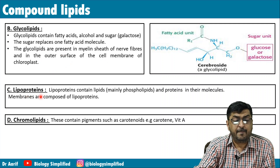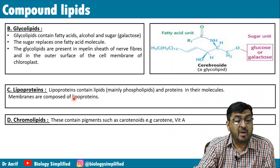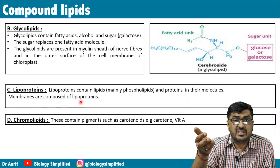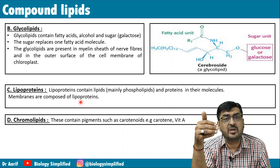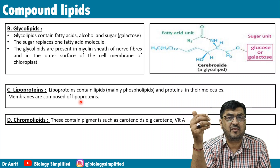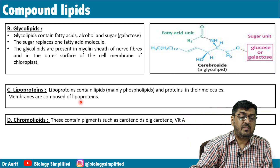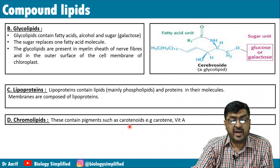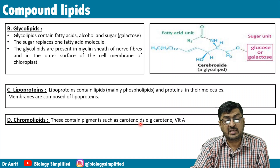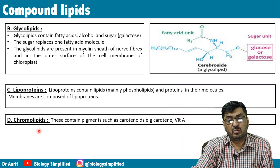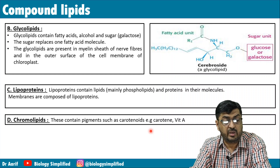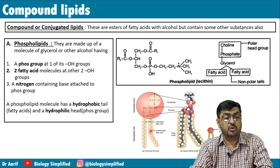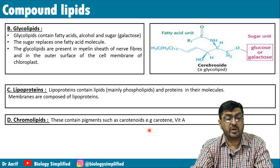The third conjugated type is lipoprotein — lipid combined with protein. Most membranes are made up of lipoproteins. HDL (high density lipoprotein) and LDL (low density lipoprotein) in blood are parameters for measuring the lipid profile. Chromolipids contain carotenoids — carotene, vitamin A — giving a reddish-orange color. So the four types of conjugated lipids are: phospholipids, glycolipids, lipoproteins, and chromolipids.